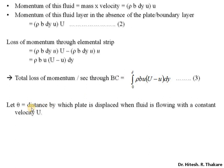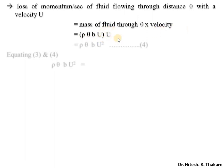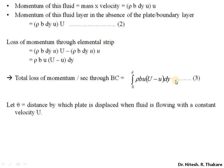Let us assume that theta is the momentum thickness — the distance by which the plate should be displaced when fluid is moving with a constant velocity U. Through this thickness, we can also calculate the loss of momentum per second, which will be calculated using the mass of fluid and the velocity of the fluid. Notice that in this case both velocities are free stream velocities, so the loss of momentum will be rho·theta·b·U².